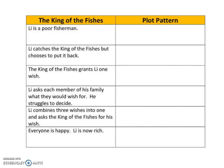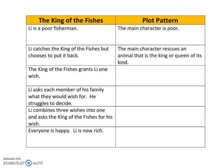When we look at the story of the King of the Fishes, we can see it follows a similar pattern to a typical wishing tale. The first thing is that Lee is a poor fisherman — so our plot pattern has the main character being poor. Then Lee catches the king of the fishes but chooses to put it back. So the next plot point we want to include is that the main character rescues an animal that is the king or queen of its kind.